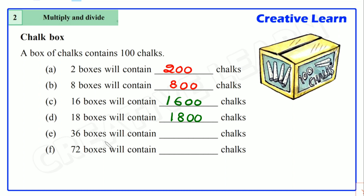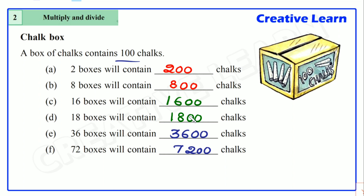Thirty-six boxes contains thirty-six hundred, means three thousand six hundred chalks. Seventy-two boxes contain seventy-two hundred, means seven thousand two hundred chalks. Simply, one box contains one hundred chalks, so you just multiply the number of boxes by one hundred. In the same way, identify the remaining answers.